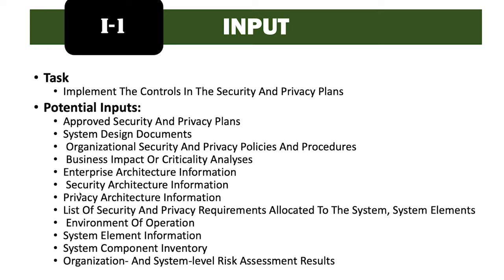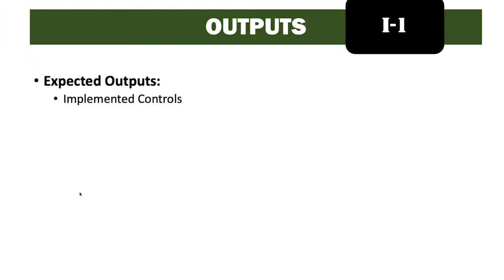Additional inputs include the system element information, the system component inventory, and organization and system level risk assessment results. The outputs for this task are straightforward — it's going to be the implemented controls.